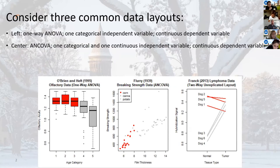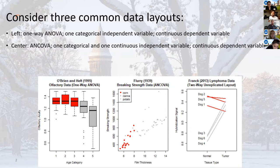In the center we have ANCOVA — analysis of covariance — where we have one categorical predictor and one continuous predictor as independent variables, and a continuous dependent variable on the y-axis. On the right we have a two-way layout with two categorical independent variables and a continuous dependent variable. So we have a broad range of statistical approaches we can take with these three data sets. For now, just look at the patterns you see in these plots and we'll talk in a moment about what these data sets actually are.